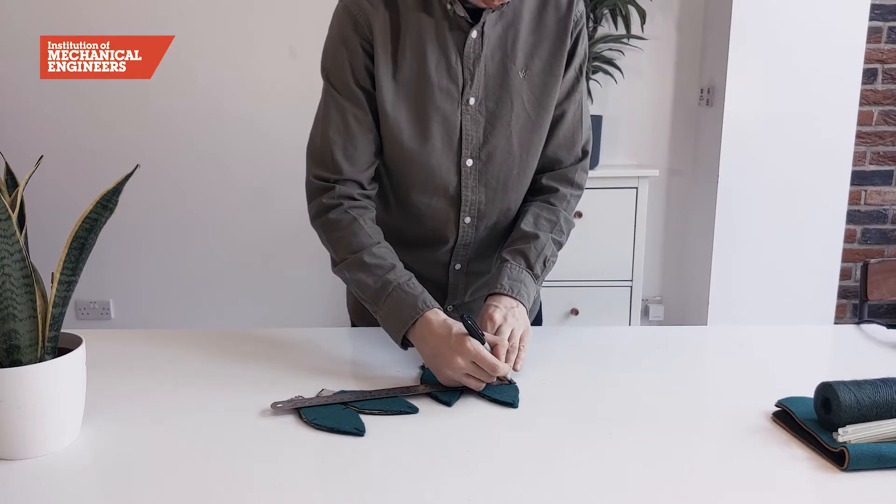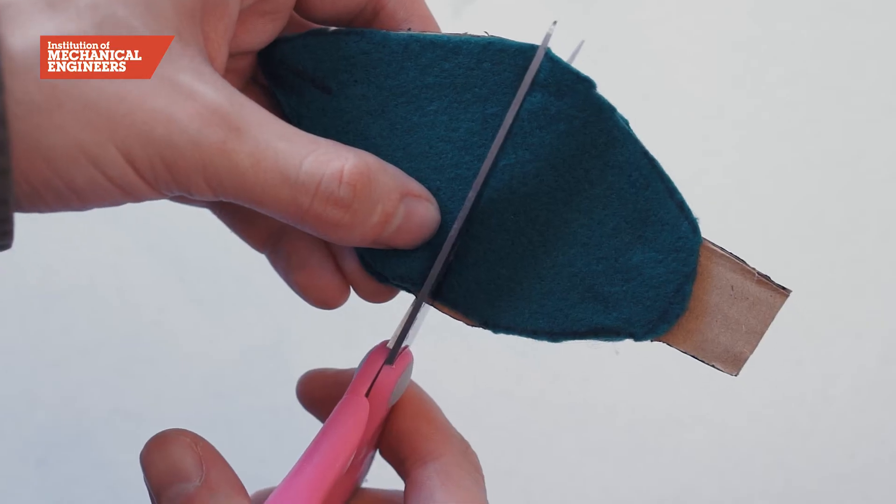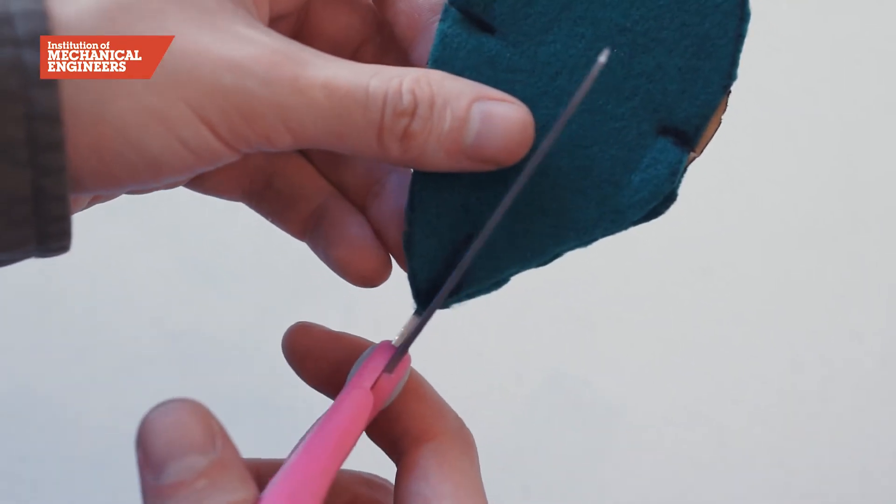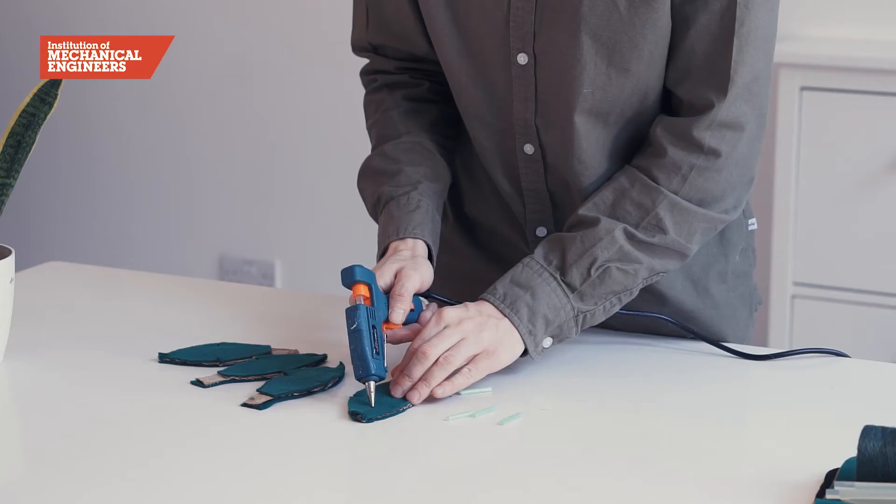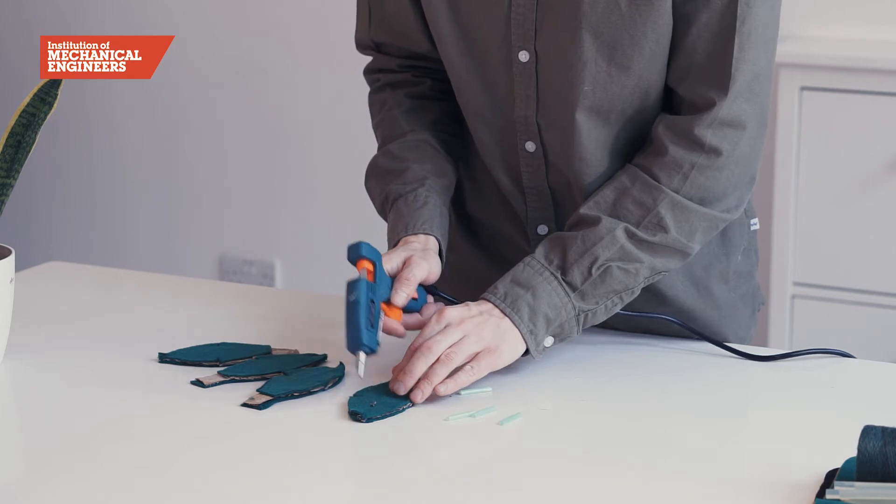To prepare the petals for connection to the winch system, cut slits in the tips and sides of each one. Then, glue a straw just below each of the slits at the tip.